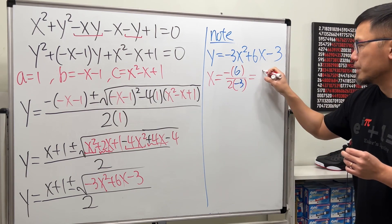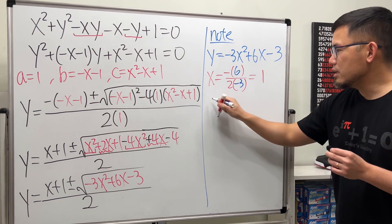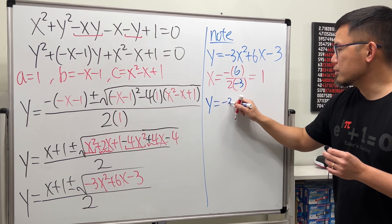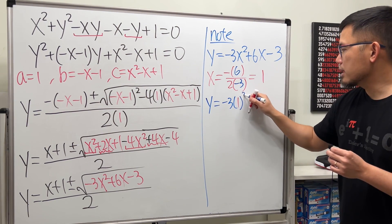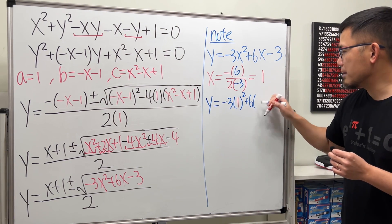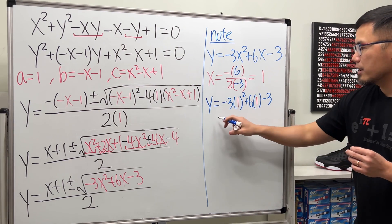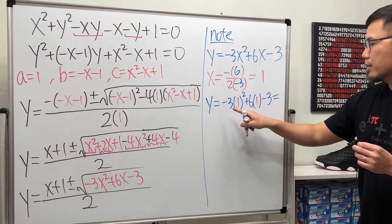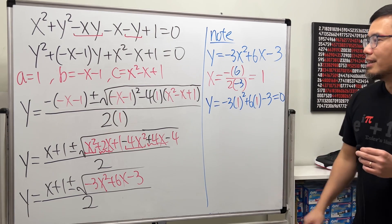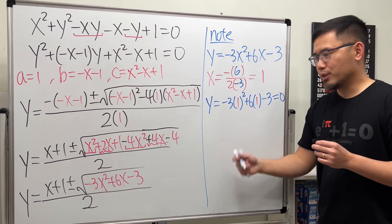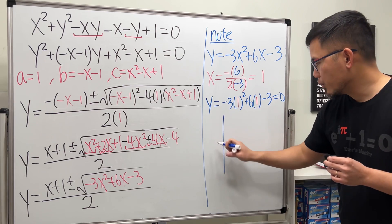This will give us negative six over negative six, that will be one. And then you see y will be negative three times one to the second power plus six times one minus three. This right here will give us zero.